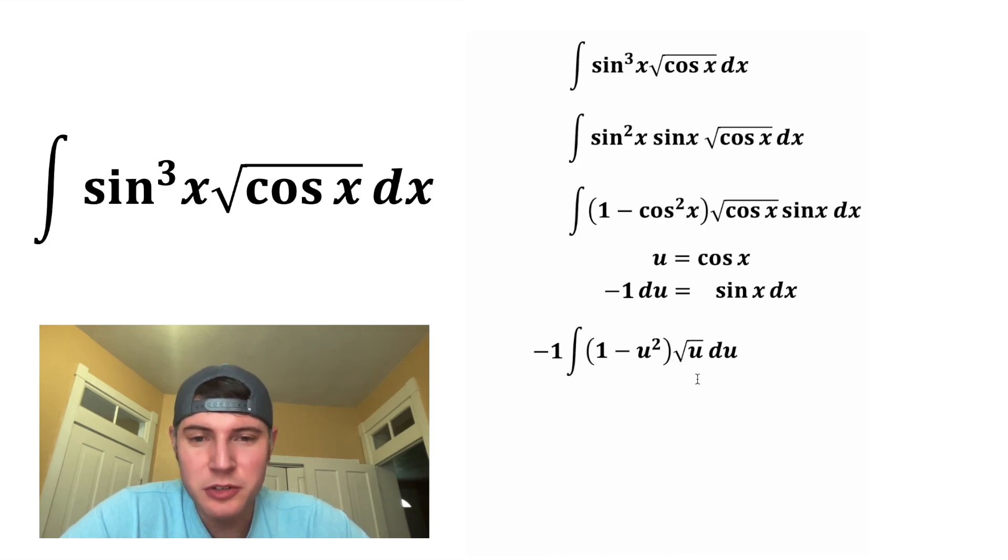So let's change the square root of u into u to the one half power. And then we're going to want to distribute this to both terms. u to the one half times one is u to the one half. And then we're going to subtract. And then u to the one half times u squared, that's going to be u to the two point five, or as a fraction, that's u to the five halves.